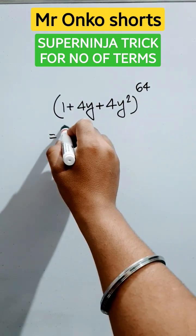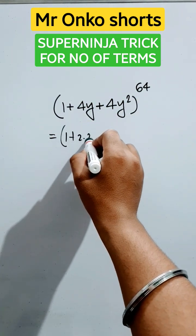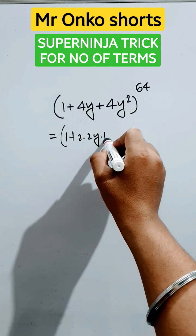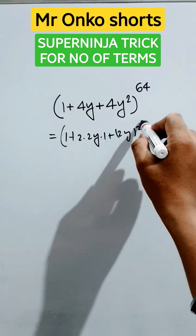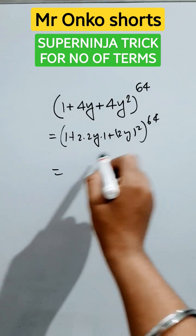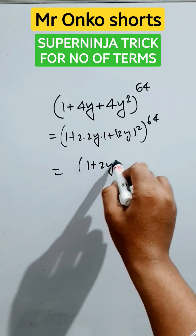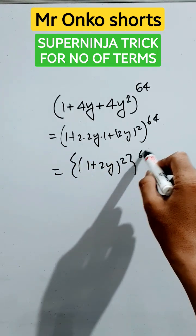1 plus 4y plus 4y squared can be written as 1 plus 2 into 2y into 1 plus 2y whole squared, whole raised to the power 64. So it will be 1 plus 2y whole squared, whole raised to the power 64.